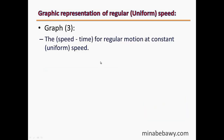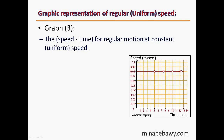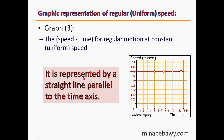The third graph is called the speed-time graph for regular motion at constant or uniform speed. Over the y-axis we write speed in meters per second, and over the x-axis we write time in seconds. As we can see, by increasing the time the speed remains constant, because this object is moving with constant speed. This graph is represented by a straight line parallel to the time axis.